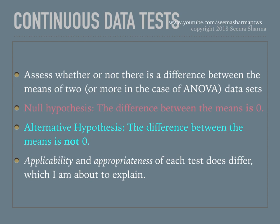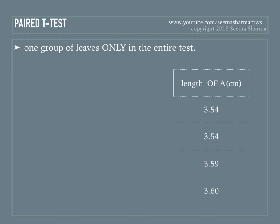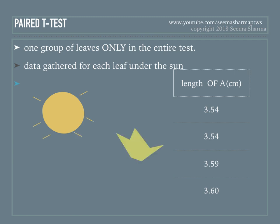The applicability and appropriateness of each test does differ, which I'm about to explain. For the paired t-test, we start with one group of leaves only in the entire test. Data is gathered for each leaf in this group under sun exposure — we have three leaves in the group: A, B, and C. Data is gathered for the length of the leaf, and the table shows values such as 3.54, 3.54, 3.59, 3.60 as lengths for leaf A. Similar tables can be gathered for leaves B and C.